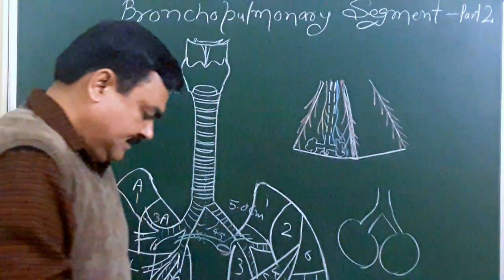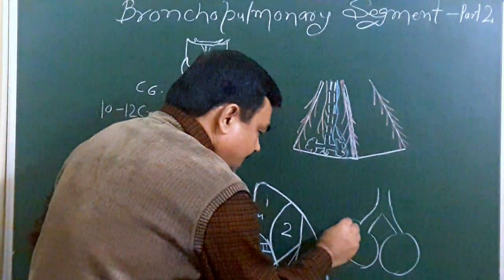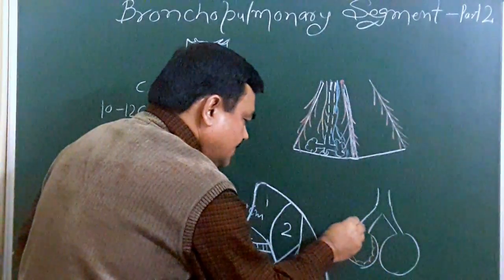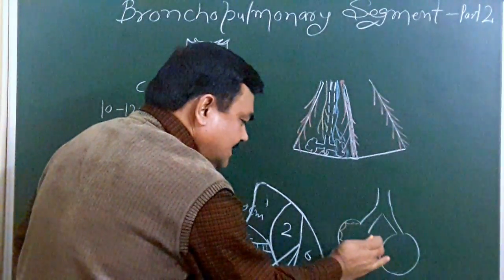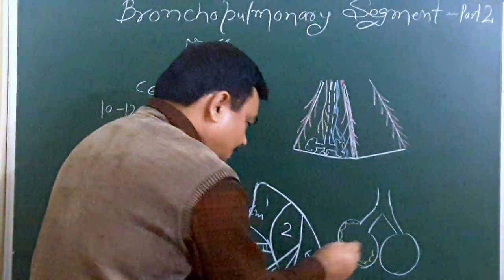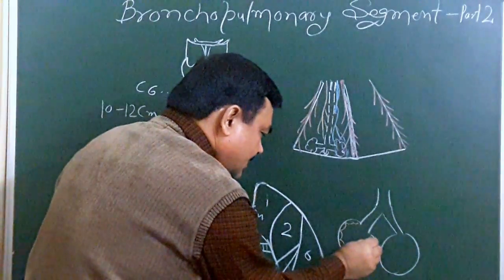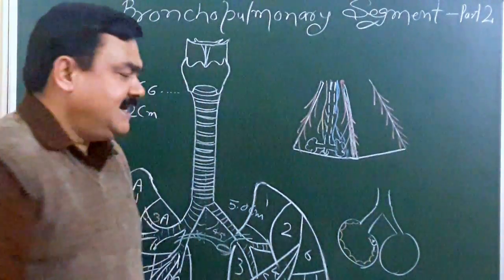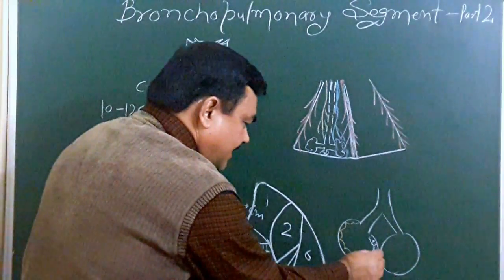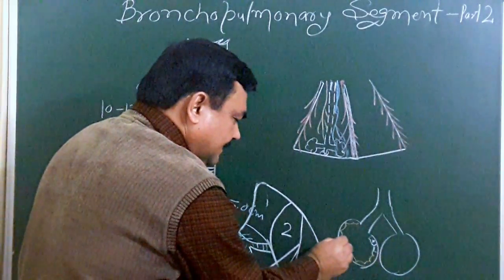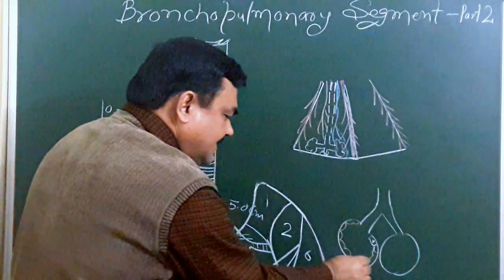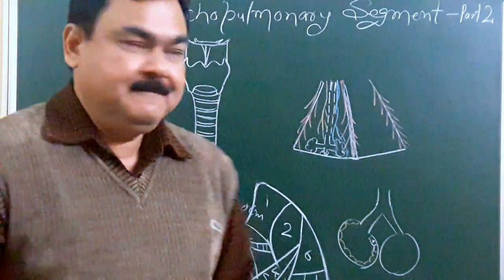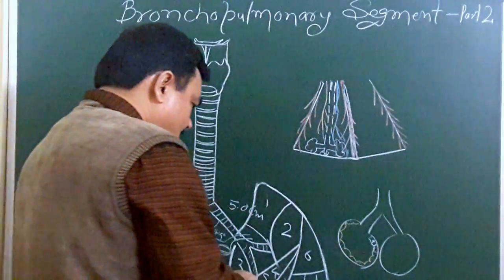Alveoli are lined by simple squamous epithelium. At some places, large cells are present. These are type 2 pneumocytes, and the rest of the cells are type 1 pneumocytes. Type 2 pneumocytes secrete surfactant.